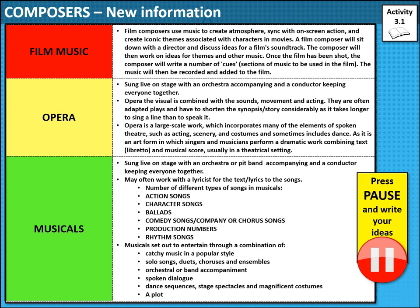Often a musical composer will work with a lyricist, or will also be a lyricist themselves. Stephen Schwartz sometimes writes his own lyrics. There are a number of different types of songs in musicals: action songs, character songs, ballads, comedy songs, production songs, and rhythm songs. A musical must be catchy — it must have solo songs, duets, choruses and ensemble numbers. There is sometimes spoken dialogue, but not in every single one. There is often dance sequences, stage spectacles, and magnificent costumes. There's quite a link between opera and musicals.